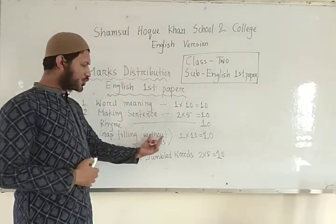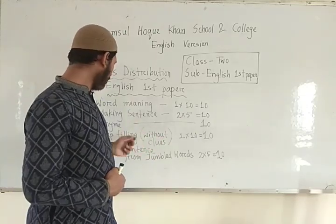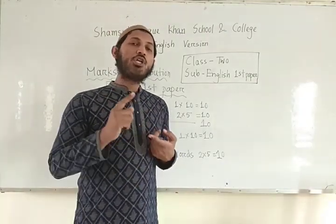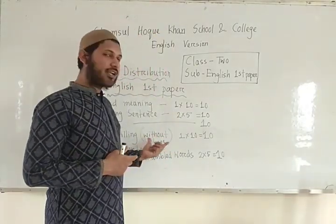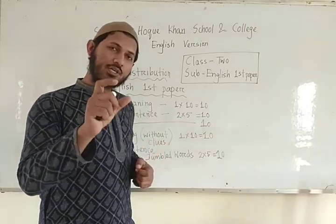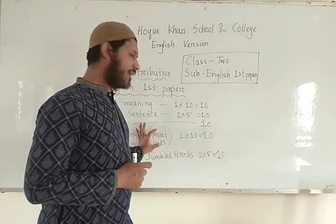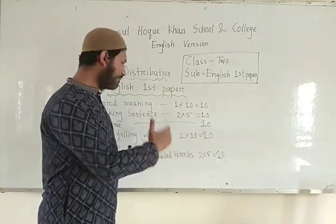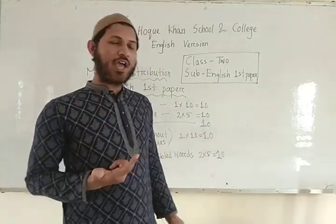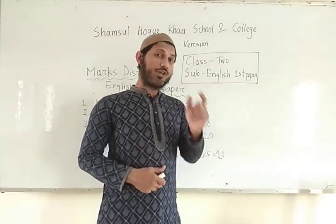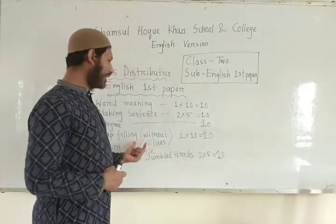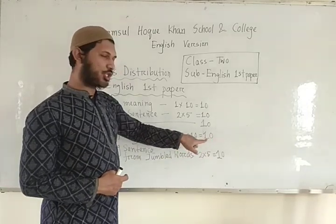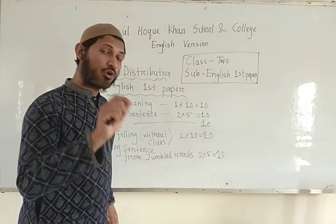Now gap filling is without clues. So when you fill the gaps and write the answer, no extra clue will be given — I repeat, no clues will be given. You have to fill in the blank and write the answer yourself. You will not get any clue in the question paper, so you have to fill up the sentence by filling the gap. If the word you give in a blank is correct, you will get full marks. Each blank contains one mark, and in total for 10 blanks you will get 10 marks.